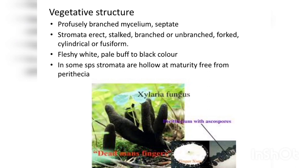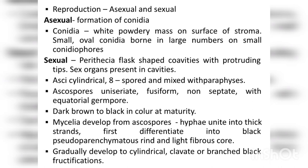The fruiting body or plant body is called the stromata. The stromata is erect and stalked. It may be branched or unbranched, and also forked, cylindrical, or fusiform — meaning tapering at both ends. It may be fleshy white, pale, black, or buff to black in color. In some species, it might be hollow.